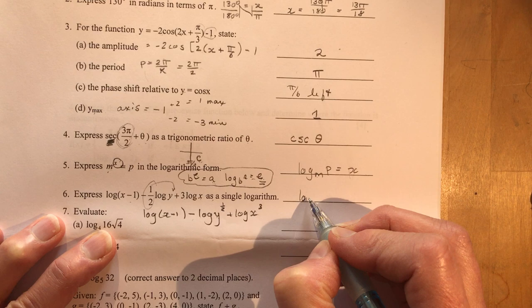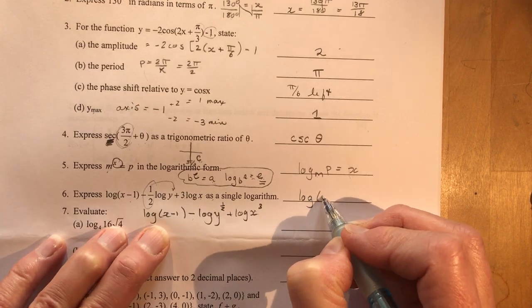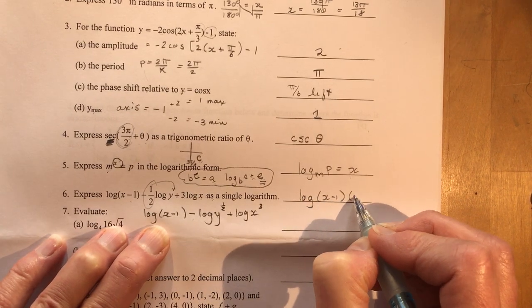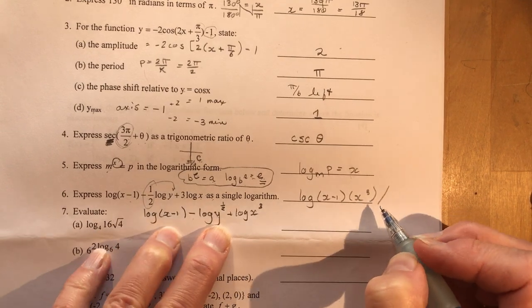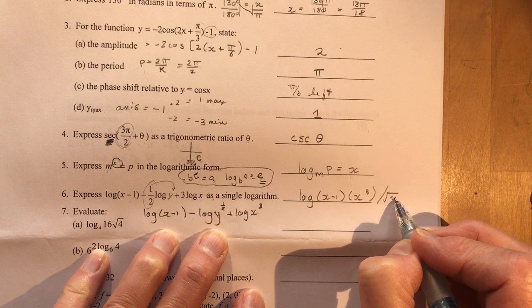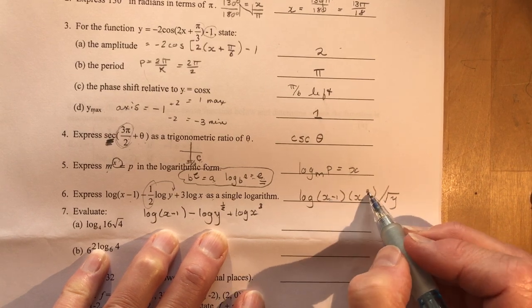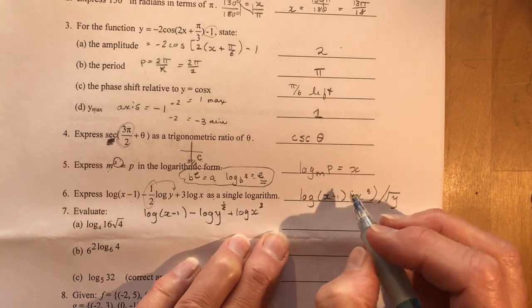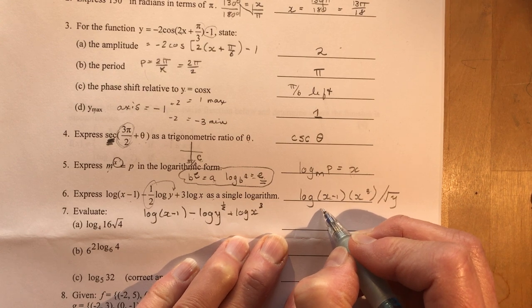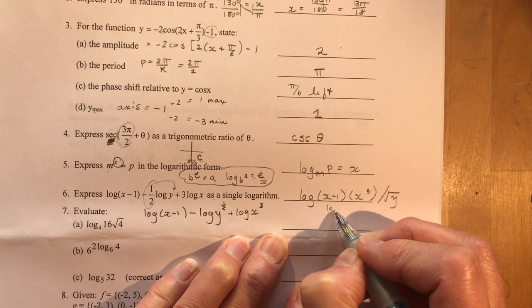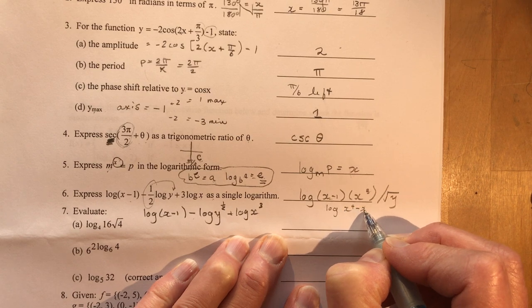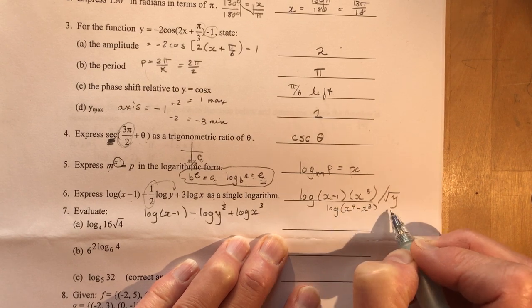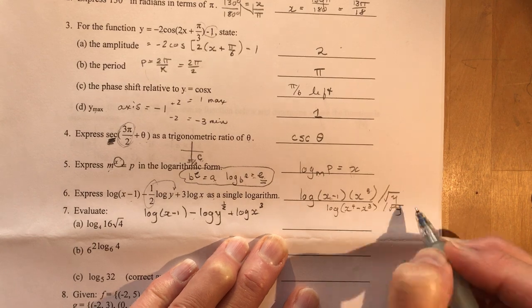So I get the log of x minus 1 times x cubed. And it's going to be divided by y to the half is the square root of y. Now you could expand this. I didn't leave myself much room to. Should have had some scrap paper. Okay. So I have the log of x to the fourth minus x cubed all over square root y. That would be a pretty nice answer.